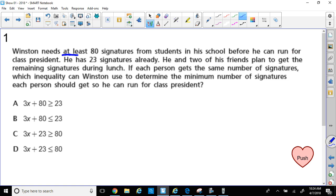So I remember the word at least in class, and when they said at least, we always use the symbol greater than and it could be or equal to, because he can get at least 80 signatures. That's what they're looking for. 80 would be the least amount he can get, but if he gets more than 80, that's great. So I'm going to automatically eliminate choice B as well as D, because they're saying those are less than. He can't get less than 80 signatures.